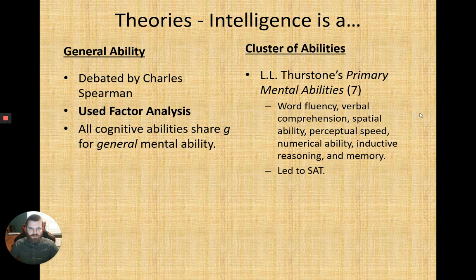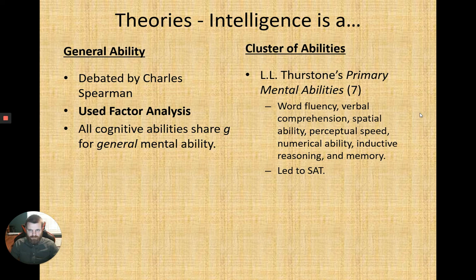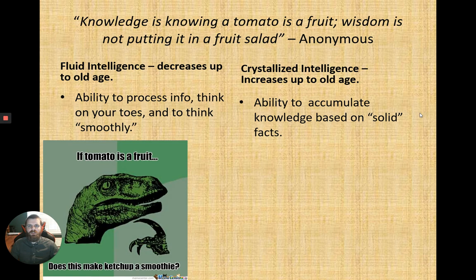General ability as intelligence was debated by Charles Spearman, who used factor analysis. The idea is that a lot of cognitive abilities share something in common, and this becomes labeled G, which stands for general mental ability. These are two theories of intelligence.